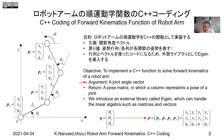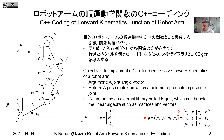Our input argument is a joint angle vector — theta one, theta two, theta sub three — given as a column vector. Our return is a pose matrix. For each joint we have three components: x, y, and theta. We have three joints plus the hand tip, so we return a three-by-four matrix.